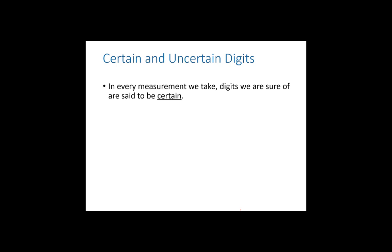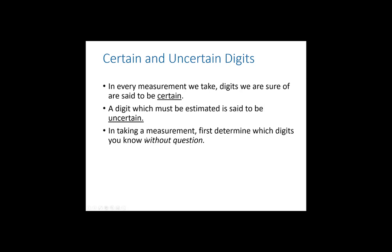In the measurements we take, there are digits we are sure of and some we are not. Digits we are sure of are called certain. Digits we are not sure of — the ones we have to estimate — are called uncertain, or estimated digits. The way we take a measurement: first determine which digits are certain and don't involve an estimate, then estimate exactly one uncertain digit. Usually there are some certain digits and then exactly one uncertain digit.